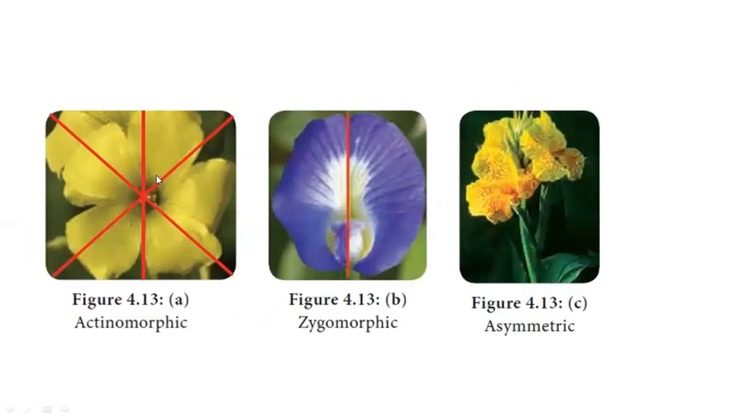Now, schizocarpic fruits. First, flower symmetry. Actinomorphic flowers can be cut in any plane into equal parts. Zygomorphic flowers have only one plane that divides them into two equal parts. Asymmetrical flowers cannot be divided into equal parts. This is regarding flower terminologies.